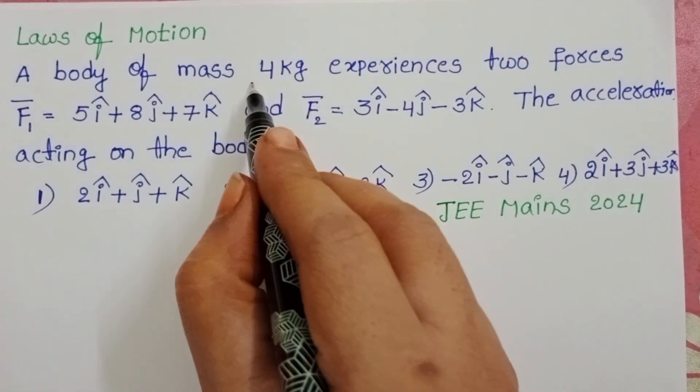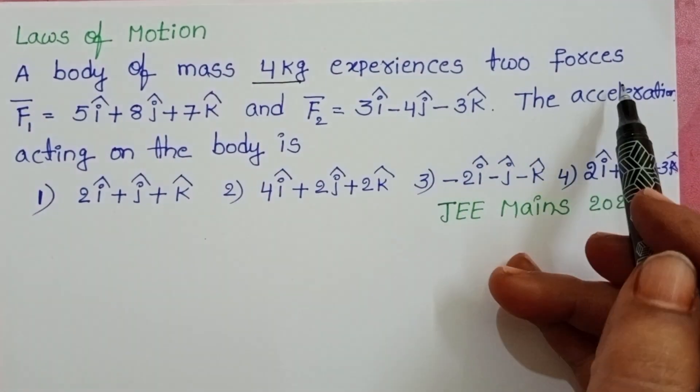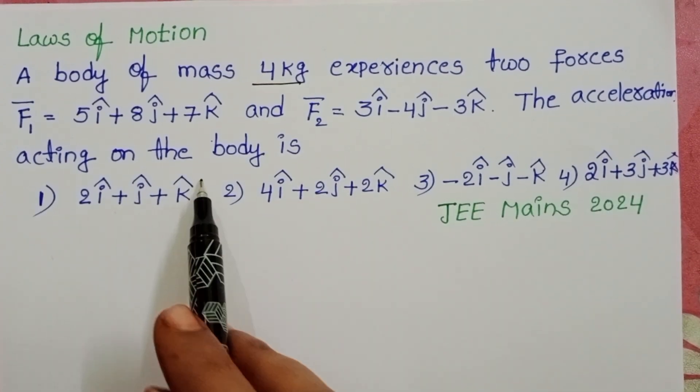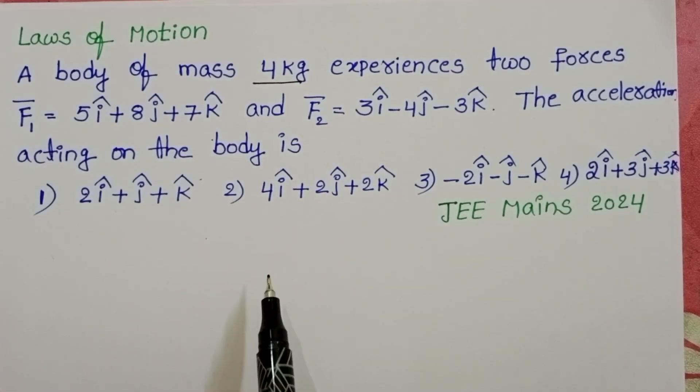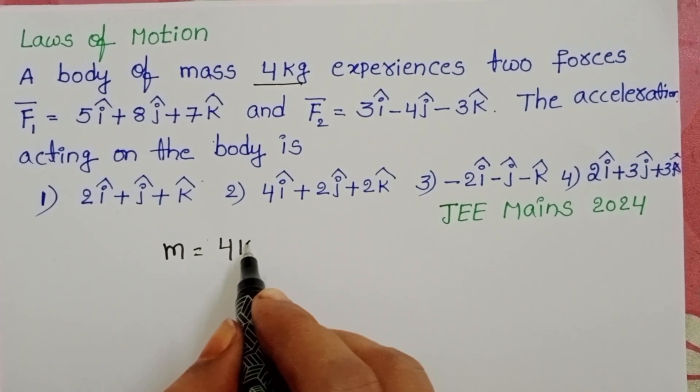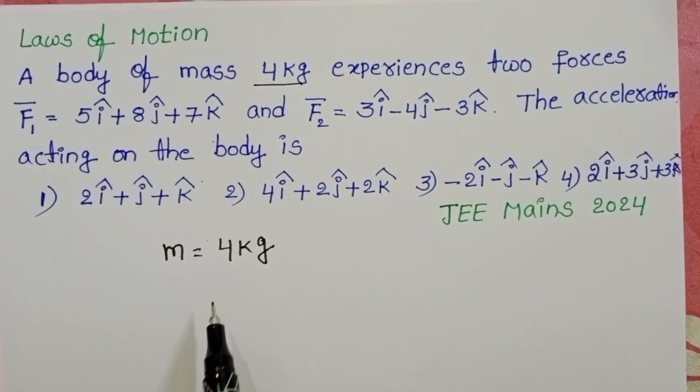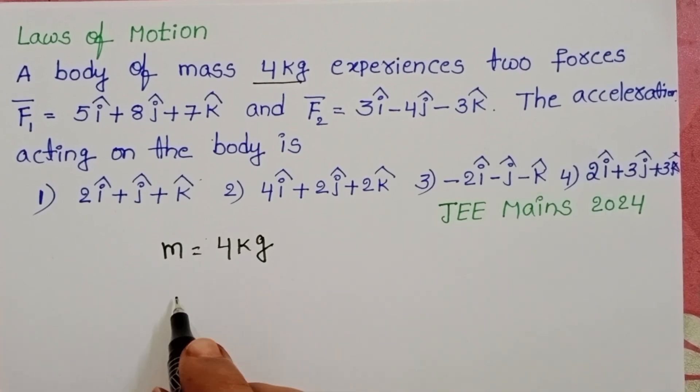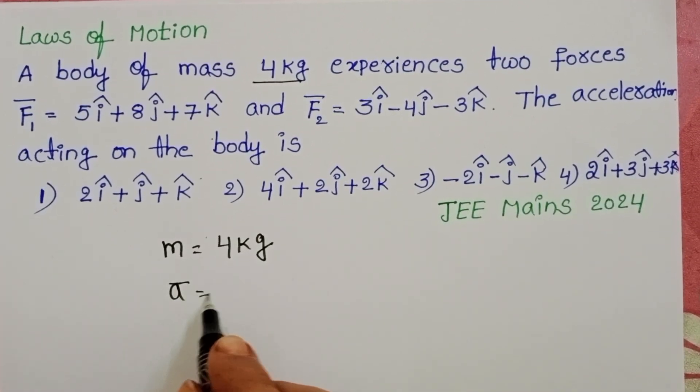A body of mass 4 kg experiences two forces F1 and F2. The acceleration acting on the body is given. Mass of the body is 4 kg and two forces acting on the body. By using this we have to find out the acceleration acting on the body.